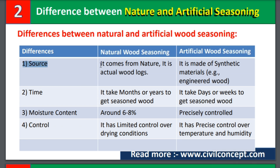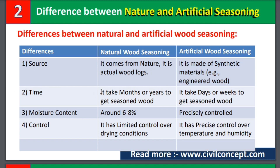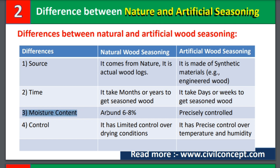Number one is source. Natural seasoning comes from nature and uses actual wood logs, while artificial seasoning is made of synthetic materials like engineered wood. Number two is time. Natural seasoning takes months or years, while artificial seasoning takes only days or weeks. Number three is moisture content. Natural seasoning contains around 6 to 8% moisture, while artificial seasoning is precisely controlled.